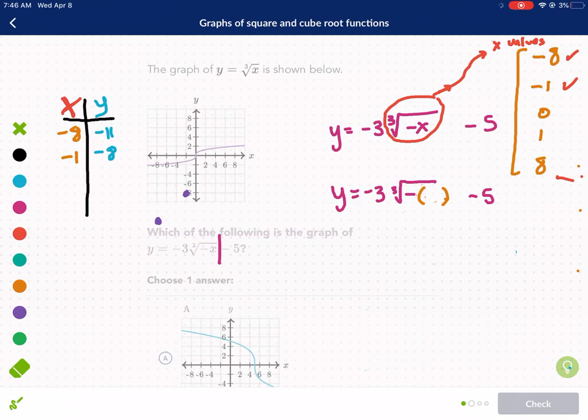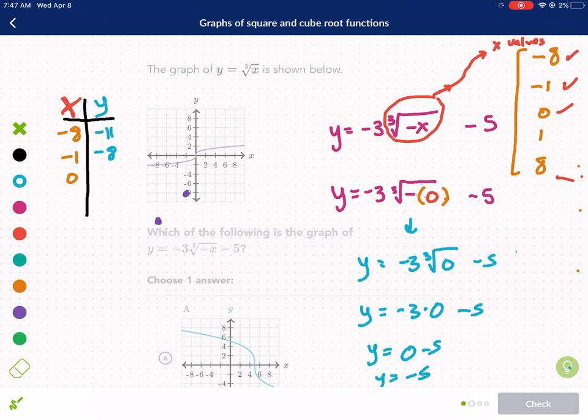So now we're going to go ahead and plug in 0 into this function. So we're going to plug in 0. And what do we get? Let's simplify it. Y equals negative 3 times the cube root of 0 minus 5. Y equals negative 3 times 0 minus 5. Y equals negative 3 times 0 is 0 minus 5. Y equals negative 5.